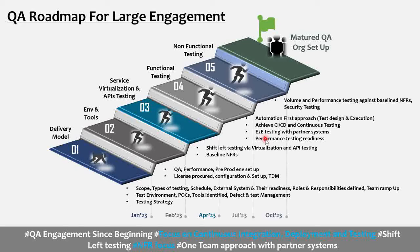Another important pointer is performance testing readiness, because performance and security testing come at the end as Step 5. Volume and performance testing cannot be done before having a stable application with no open critical defects. Once the application is certified against baseline NFRs and security testing is completed and approved, the application is ready to deploy to production.